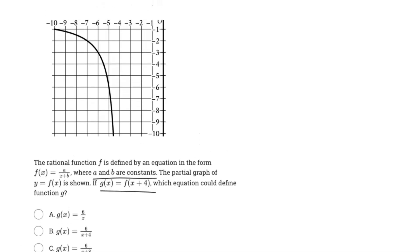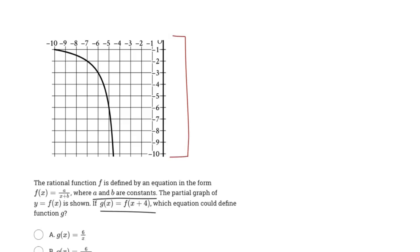First off, what we need to do is determine what those constants are, because we can't be throwing in random numbers. That's the entire reason they gave us this partial graph, so we can identify the coordinate points and actually find a and b.